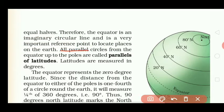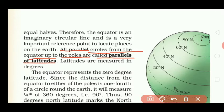All parallel circles from the equator up to the poles are called parallels of latitudes. तो जितने भी circle हैं जो equator के ऊपर और नीचे खींचे गए हैं, यह सब parallels of latitudes कहलाते हैं। Latitudes are measured in degrees — और इसको हम degrees में measure करते हैं।